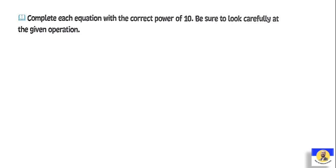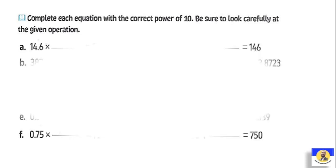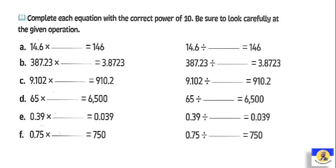Complete each equation with the correct power of ten. Be sure to look carefully at the given operation. المرة دي عاوزك تعمل complete by using the correct power of ten. In the first: 14.6 by what equals 146? The decimal point moved to the end here — يعني تحركنا one digit to the right. So it means we will do multiply by ten.